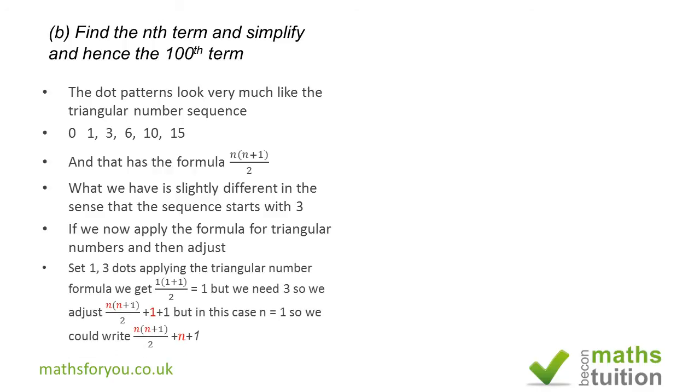So now if we substitute n for the first term, we have 1 times (1+1) divided by 2, and that's equal to 1, but we've got 3, so we are short by 2. So what I then did was to use the triangular number formula plus n plus 1. Right, so we're going to end up with n(n+1)/2 + n + 1. If we check it out, this will give you 1 plus 1 plus 1, which gives you 3, so that's okay for the first term.